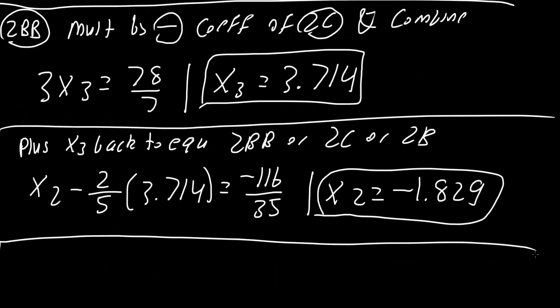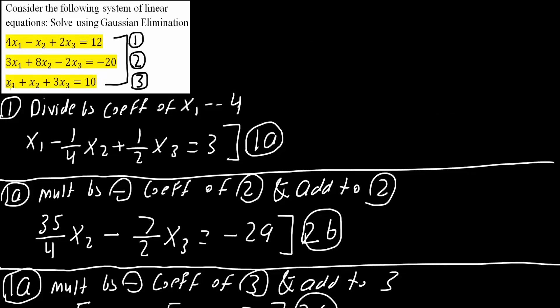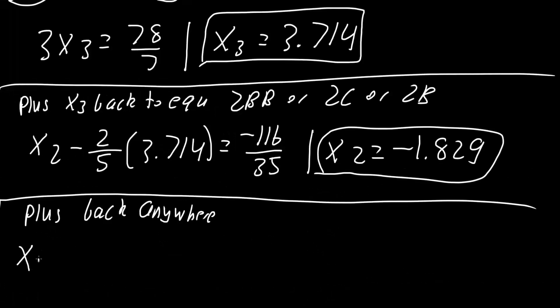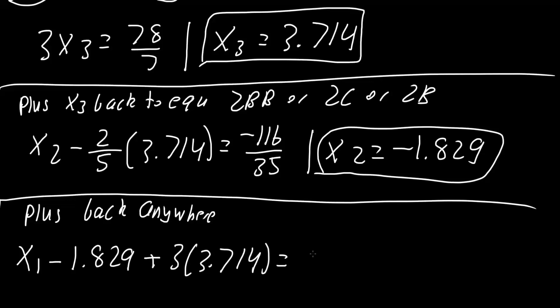The last step is easy — we can plug x2 and x3 into almost any original equation. I chose equation 3: x1 plus x2 plus 3x3 equals 10. Substituting, we get x1 minus 1.829 plus 3 times 3.714 equals 10, which gives us x1 equals 0.687.